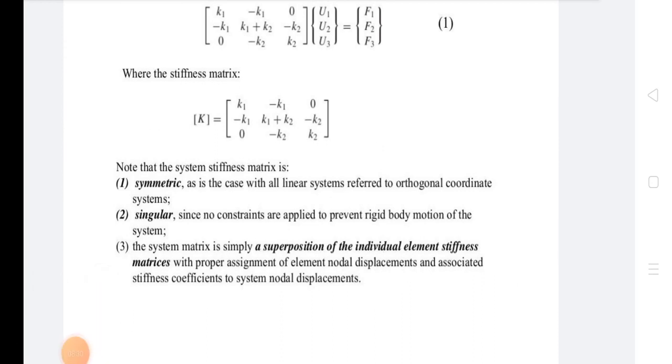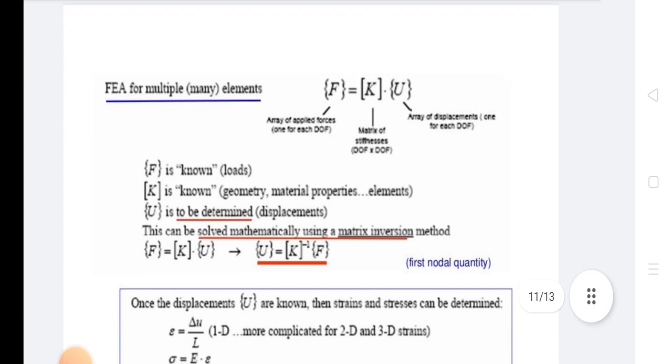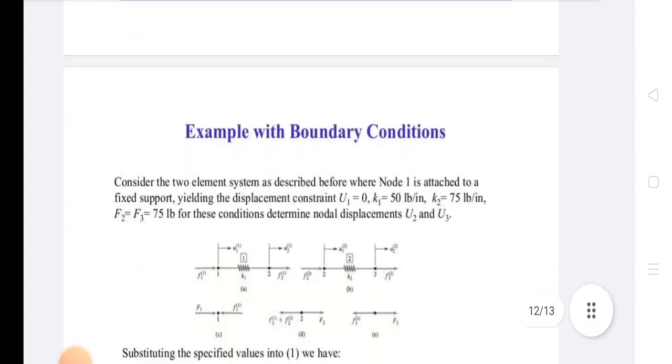Note that the system stiffness matrix is symmetric as is the case with all linear systems referred to orthogonal coordinate systems. It is singular since no constraints are applied to prevent rigid body motion of the system. The system matrix is simply a superposition of the individual element stiffness matrices with proper assignment of element nodal displacements and associated stiffness coefficients to system nodal displacements.